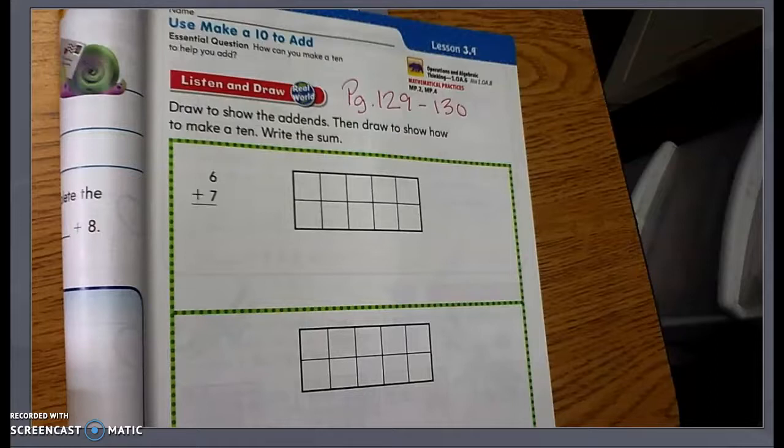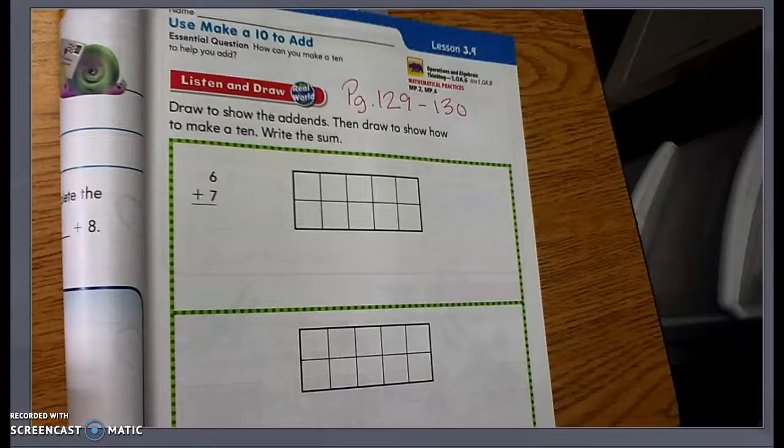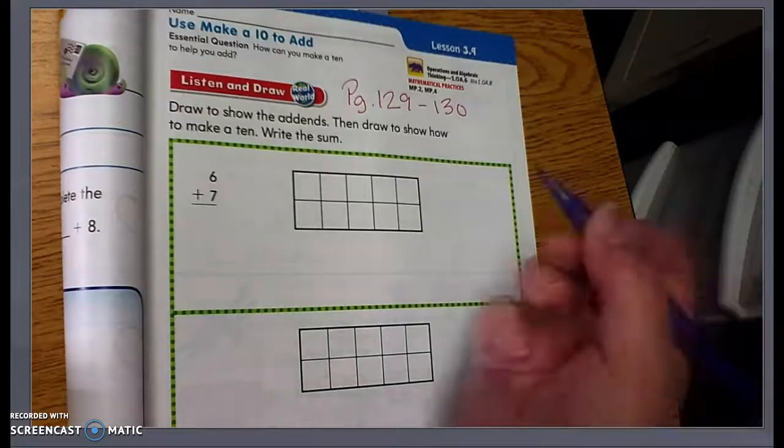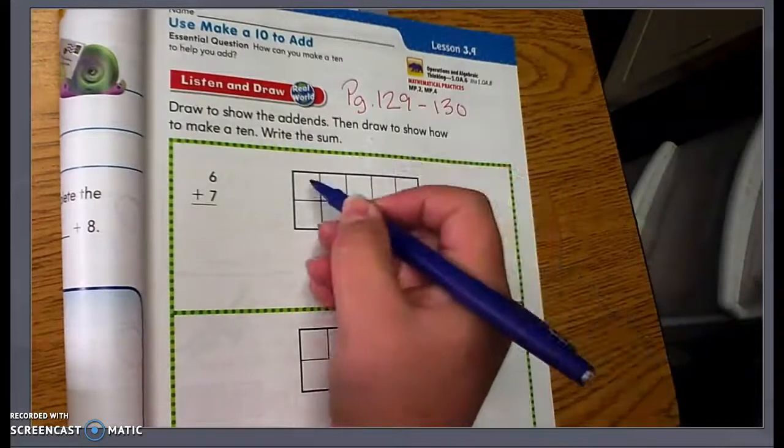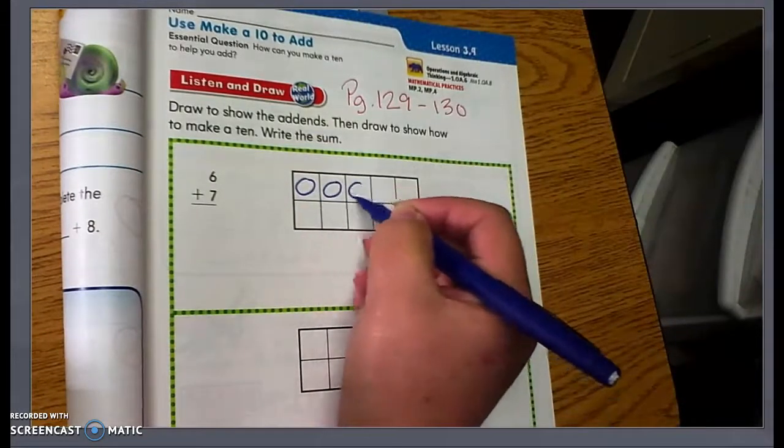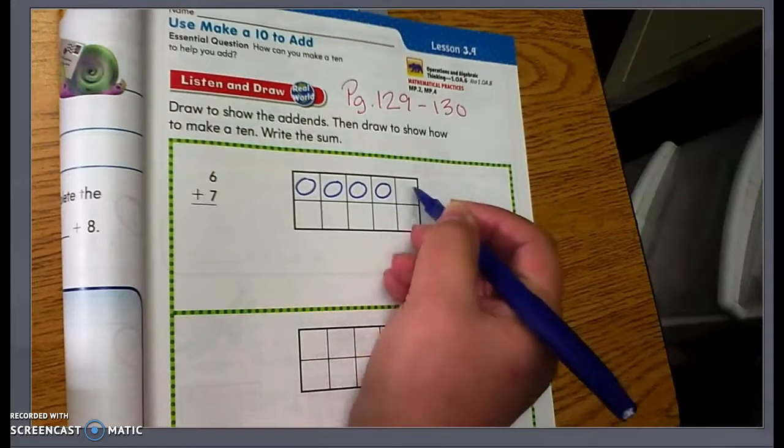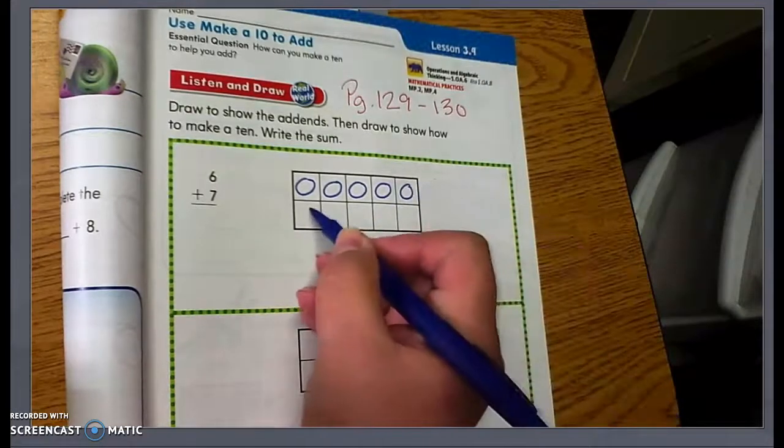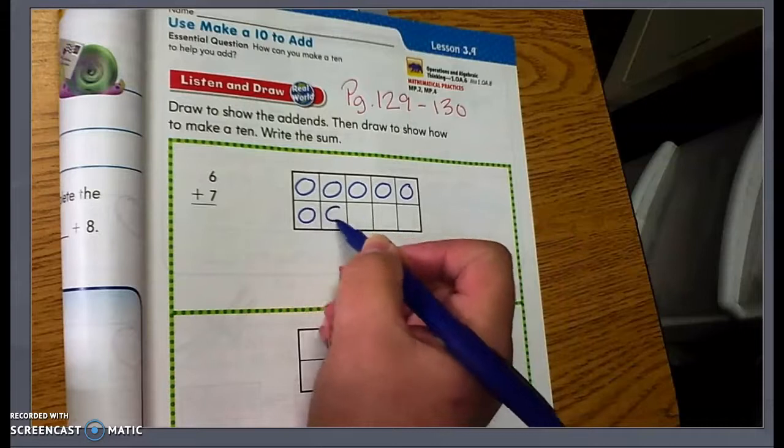So we have six red blocks and seven blue blocks. First of all, I'm going to use the larger number, which is the seven, because I can fill in seven blue counters. So I'm going to draw seven blue counters: one, two, three, four, five, six, seven.